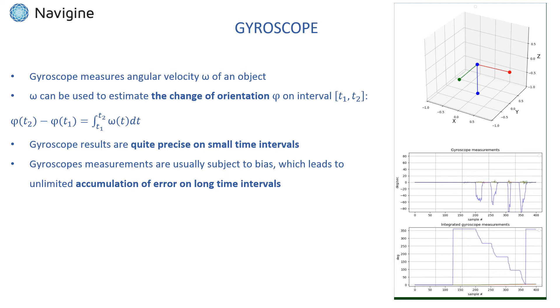The benefit of using gyroscope is that it gives quite precise estimated heading compared to magnetometer on small time intervals. However, the readings from gyroscope are subject to constant bias which leads to unlimited accumulation of error over time. This makes gyroscope unacceptable for long-term positioning purposes.